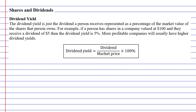We now need to move on to our last term, which is called the dividend yield. A dividend yield is basically the same as a dividend, except we're representing it as a percentage of the market value. For example, let's say a person has shares in a company valued at $100 — their shares have a market value of $100 — and let's say they receive a dividend of $5. We would say that the dividend is $5, but the dividend yield is 5%, because $5 is 5% of $100. We have a formula here which you can use to calculate the dividend yield, but if you're just good at calculating percentages, you don't really need to use the formula.